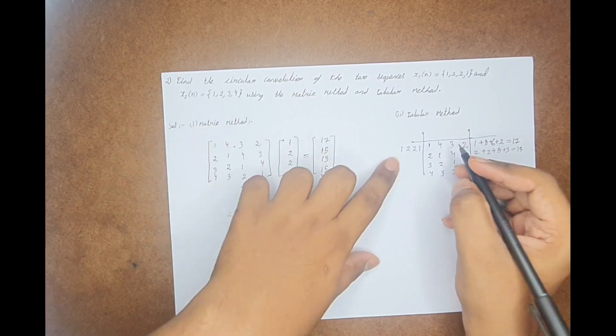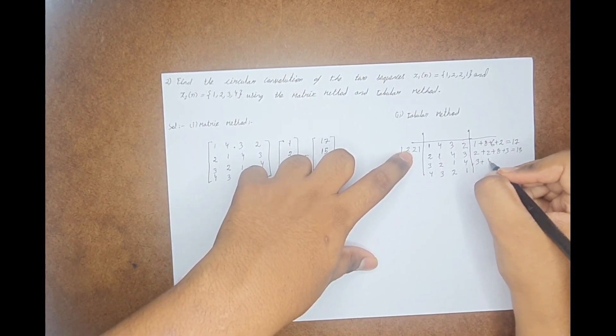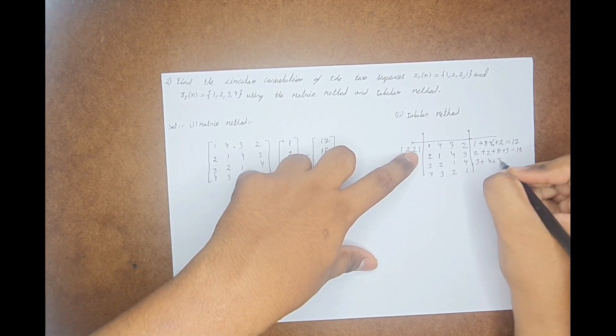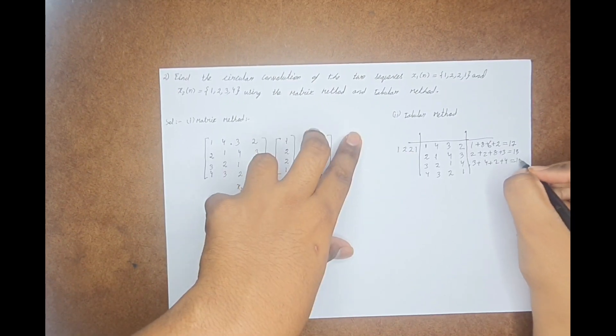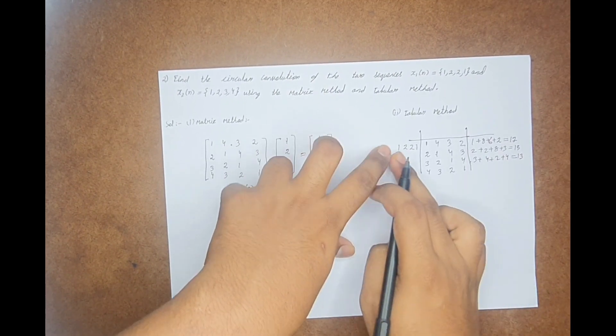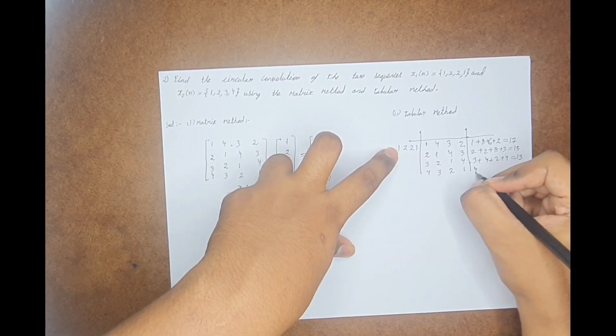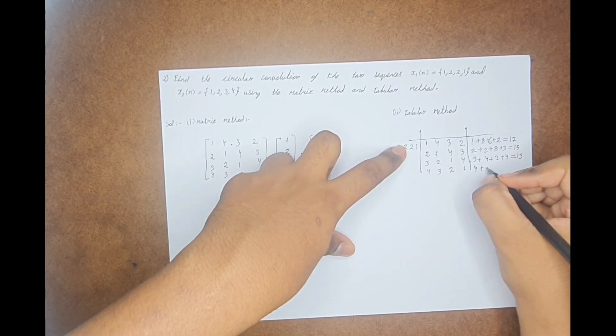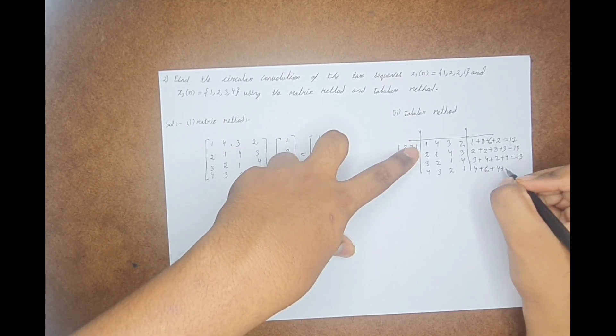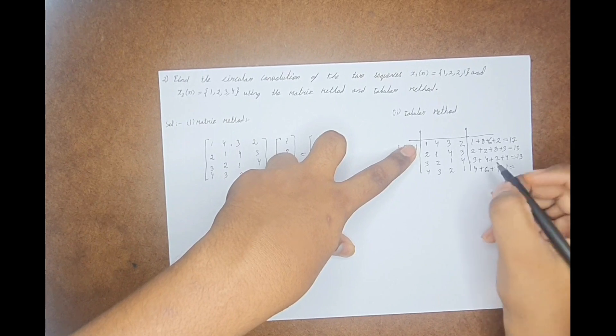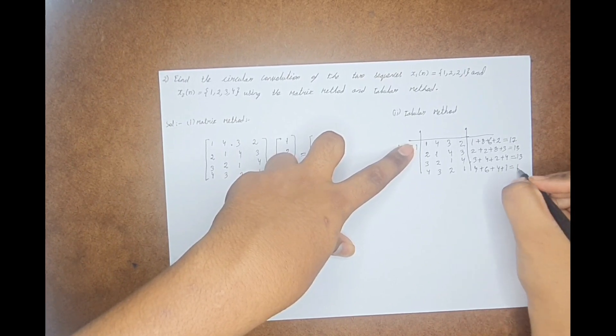Similarly, multiply this both. We get 3 plus 2 into 2 is 4, plus 2 into 1 is 2, 1 into 4 plus 4, which is 8, 10, and this is 13. Similarly, multiply this row with this. We get 1 into 4 is 4, plus 3 into 2 is 6, plus 2 into 2 is 4, plus 1 into 1 is 1, which will give me the value of 15.